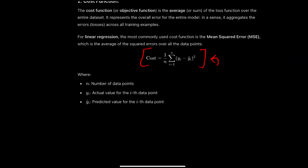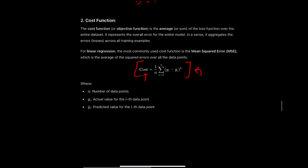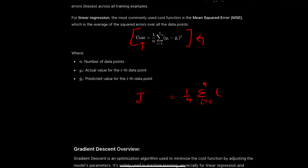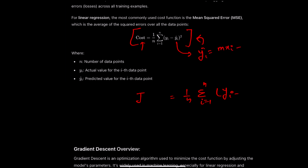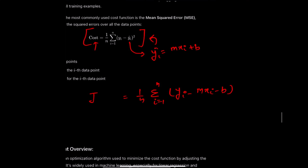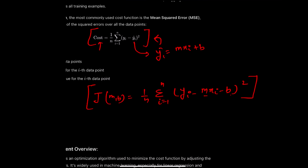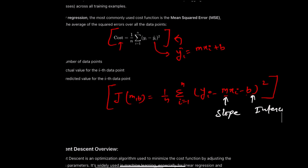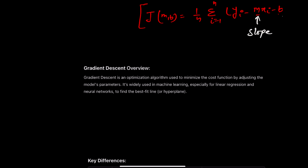We always want to reduce the cost or loss. One technique for doing this is gradient descent. With gradient descent, we try to minimize the cost function J. The cost function can be written as J(m, b) = (1/n) Σ(yᵢ − (mxᵢ + b))². We minimize J by tweaking the parameters m (the slope) and b (the intercept).